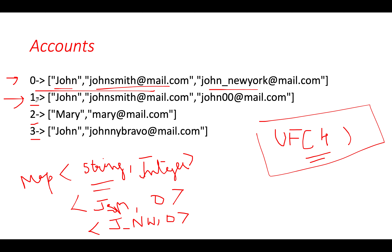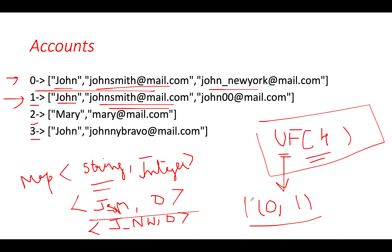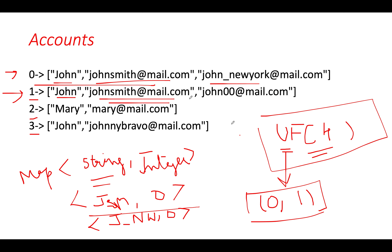Now comes an interesting case. For the second account, the email johnsmith@mail.com already exists in the map at ID zero. So we invoke unification on the Union Find object, unifying account ID zero and account ID one together. This makes zero the parent of one, so account one's parent is now zero in our Union Find array.